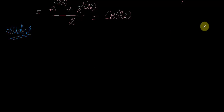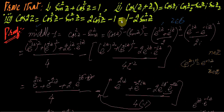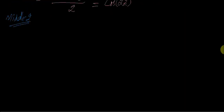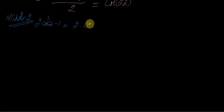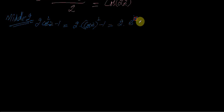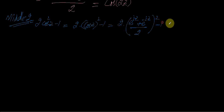Dear students, now we will solve the middle — the second middle, right middle — that 2cos²z minus 1. This is equal to them, so 2cos²z minus 1, which means 2 times cos of z squared minus 1. We substitute cos of something as (e^(iota·something) + e^(-iota·something)) divided by 2, whole squared minus 1.